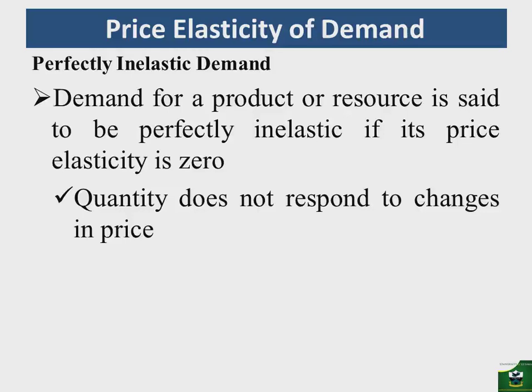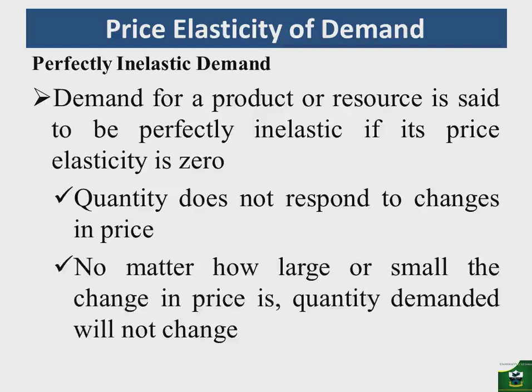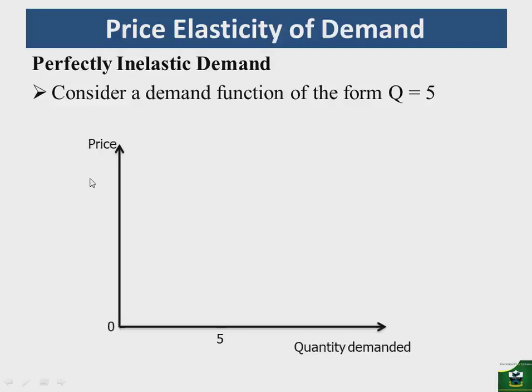With perfectly inelastic demand, you cannot change the quantities consumed. Drawn in isolation, the demand curve will also not obey the law of demand because it will be a vertical line. Graphically, if we assume a demand function of the form Q = 5, then with price on the vertical axis and quantity demanded on the horizontal axis, at a quantity of 5 our demand curve will be vertical and the elasticity of demand will be zero.